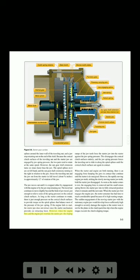When the engine fires and the engine jaw overruns the starter jaw, the sloping ramps of the jaw teeth force the starter jaw into the starter against the jaw spring pressure. This disengages the conical clutch surfaces entirely, and the jaw spring pressure forces the traveling nut to slide along the spiral splines until the conical clutch surfaces are again in contact. When the starter and engine are both running, there is an engaging force keeping the jaws in contact that continues until the starter is de-energized. However, the rapidly moving engine jaw teeth striking the slowly moving starter jaw teeth hold the starter jaw disengaged. As soon as the starter comes to rest, the engaging force is removed and the small return spring throws the starter jaw into its fully retracted position.